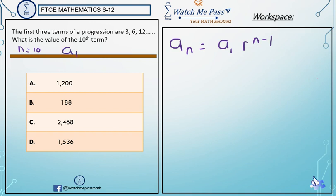a1 stands for the first position and the first position here is 3. So a sub 1 is 3.